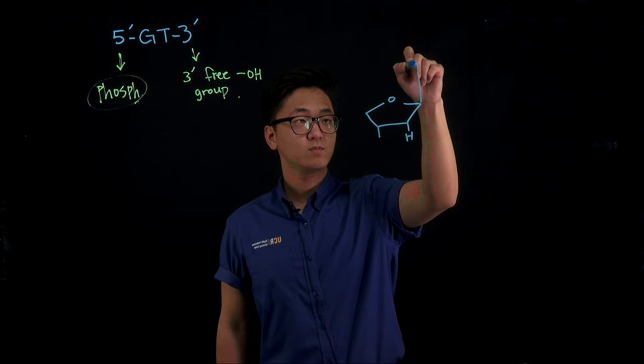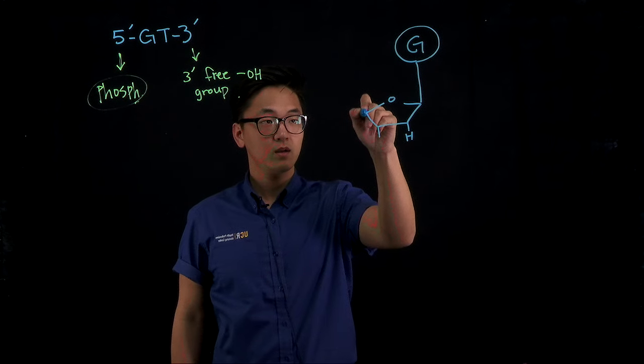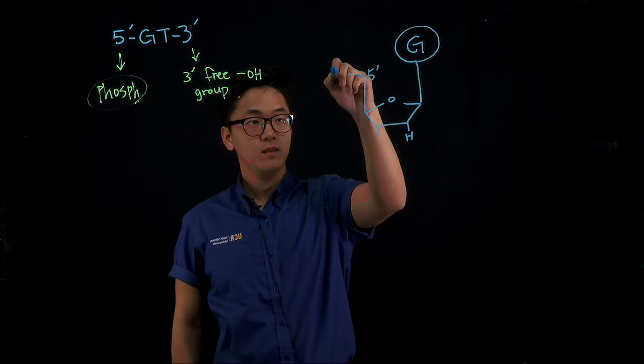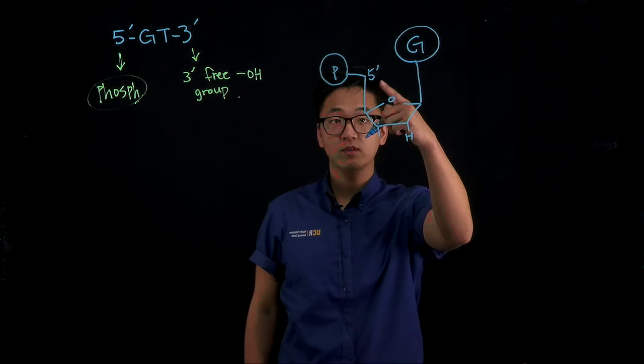And then we have a base and this base over here must be G because we're starting from 5' and this is our 5' end. And at the end of the 5' end we have to have it phosphorylated.